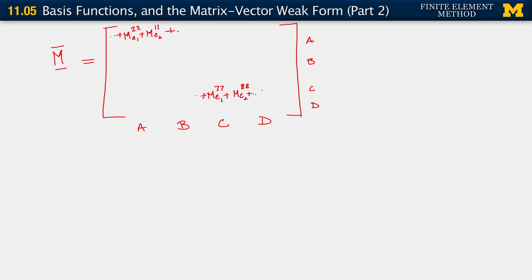Let's do the ab term. For the ab term, what we see is that from e1, we get the 2,6 component, and from e2, we get the 1,5 component. And maybe other ones too—other ones from other elements that share nodes a and b.